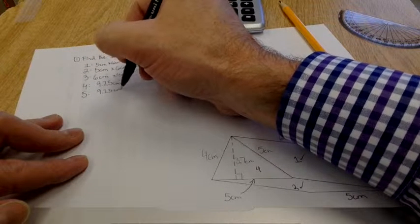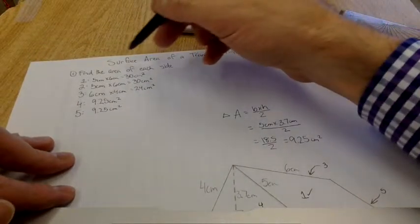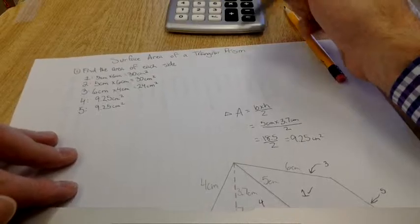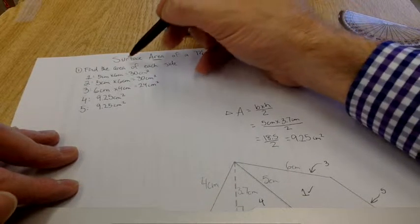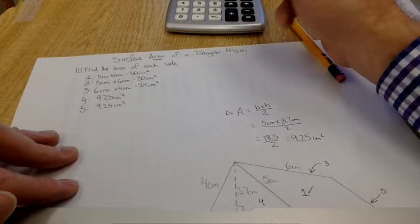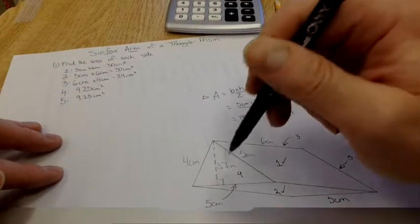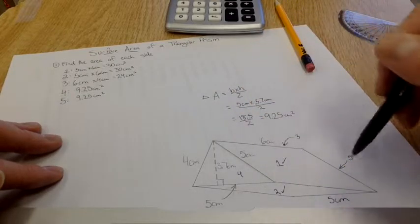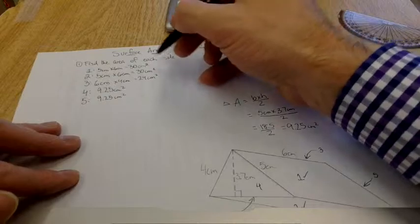Now because we're talking surface area of a triangular prism, what I'm learning is what is the area of all of the surfaces of that triangular prism. And all that means is I'm going to add the areas of all of the different sides together. So I've got my 30, 30, 24, 9.25, and 9.25.